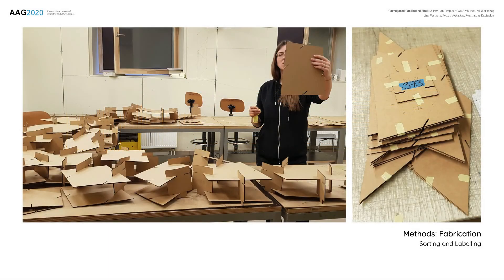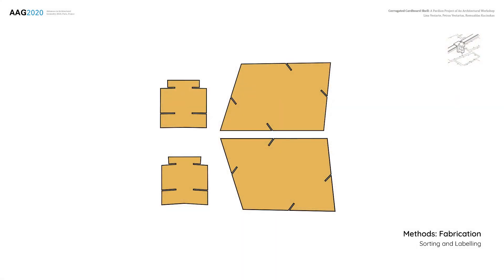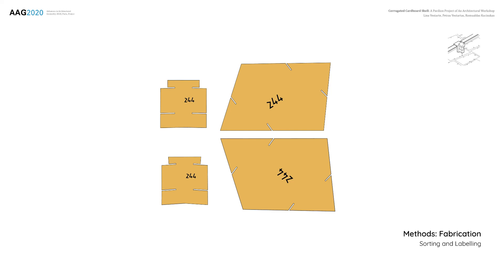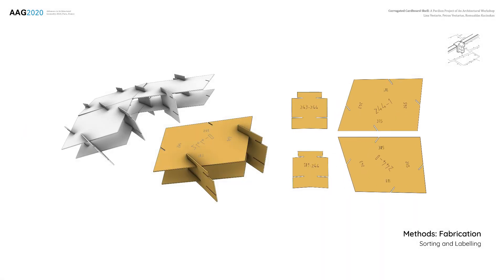Due to the large number of unique but very similar pieces, labeling was necessary for the assembly. The enumeration, following the assembly sequence, was engraved at the center of each panel. Each panel also had identification for the inner or outer layer and numbers naming the neighboring panels with regards to each edge. The diagonal connection element had a label marking the neighboring panels it connects. For aesthetic purposes, the engravings were hidden inside the structure between the two layers.